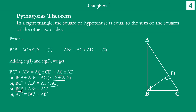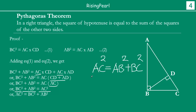So, BC² plus AB² is equal to AC², and that is what we wanted to prove. Pythagoras Theorem says that if you take a right angle triangle, the hypotenuse square AC² should be equal to AB² plus BC², and this should be true for any right angle triangle. That is exactly what we have just proved. This is how we prove Pythagoras Theorem.